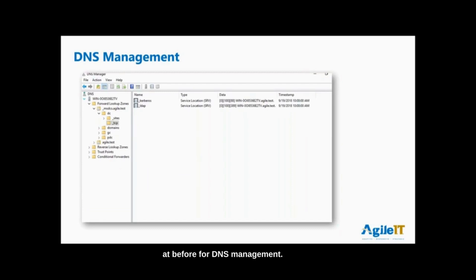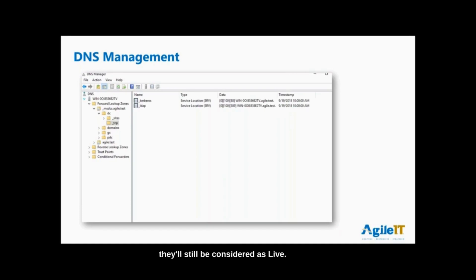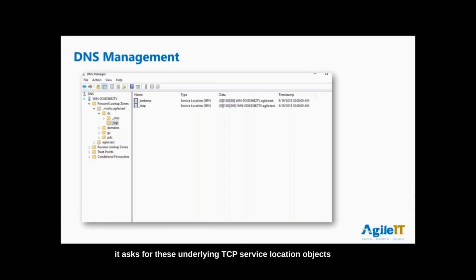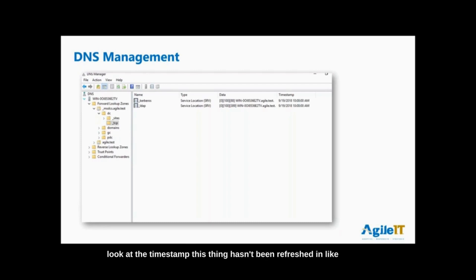For DNS management, stale records often show up here as Kerberos and LDAP records. In this particular folder for TCP connections, it lists all the domain controllers that can serve Kerberos authentication and LDAP. If you have stray objects here they'll still be considered live — the computer doesn't know which one is actually alive until it tries to contact it, which is why workstations start to hang. This is one of the first cheap and easy places I'll look — check the timestamp. If a record hasn't been refreshed in two years, that server's probably been dead and it's likely leading to a lot of other problems.